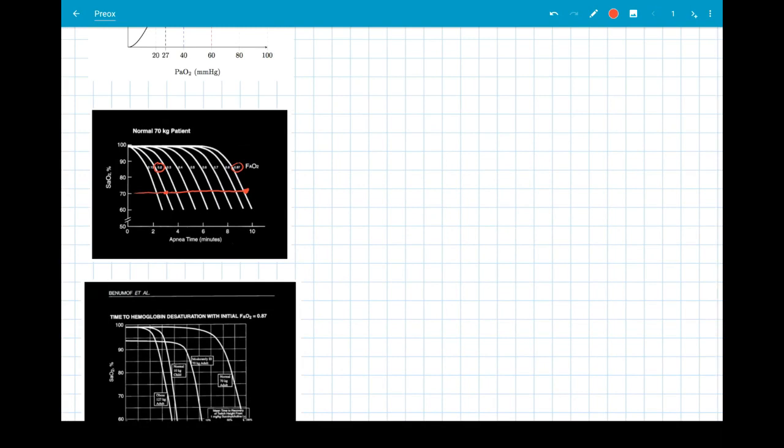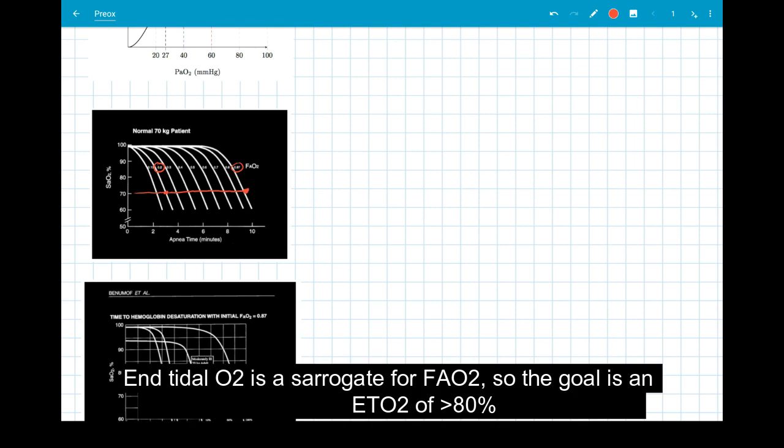Again, emphasizing here, if you do not pre-oxygenate adequately, you are only buying yourself about 3 minutes of apnea time, versus if you pre-oxygenate with FaO2 of 87%, you will buy yourself almost 10 minutes of time in a normal 70-kilogram patient.